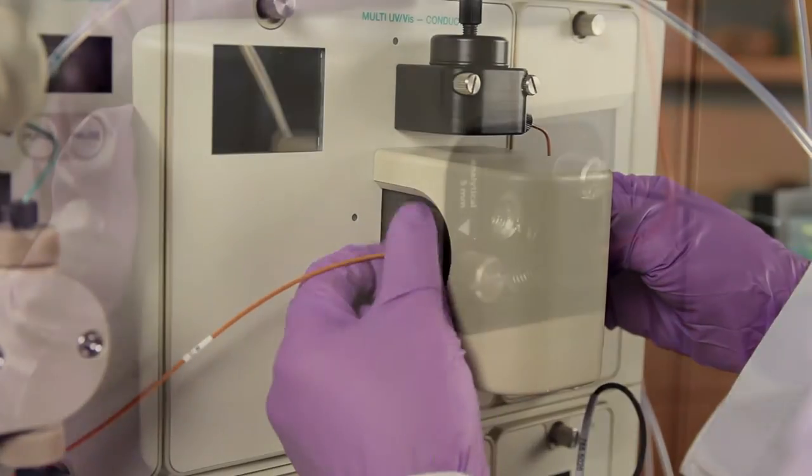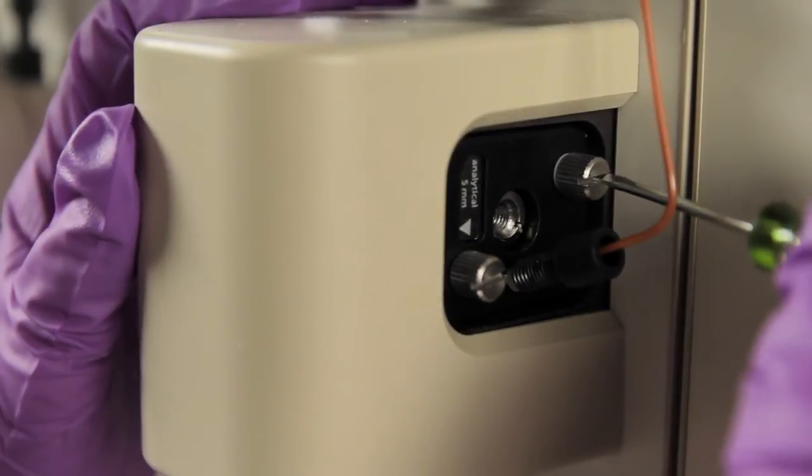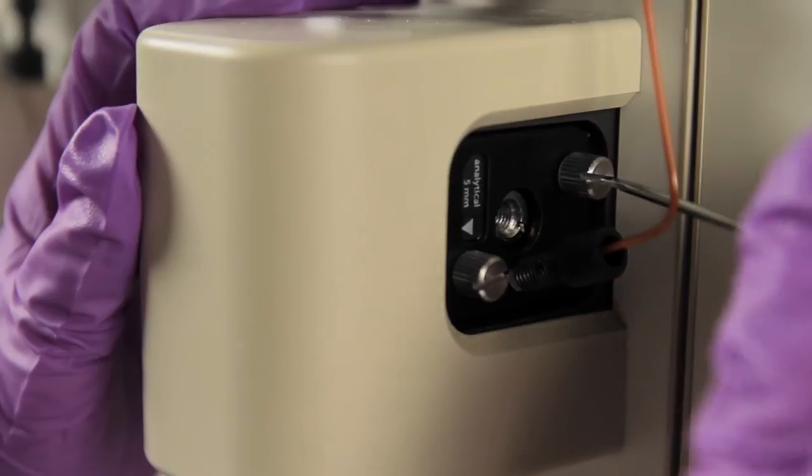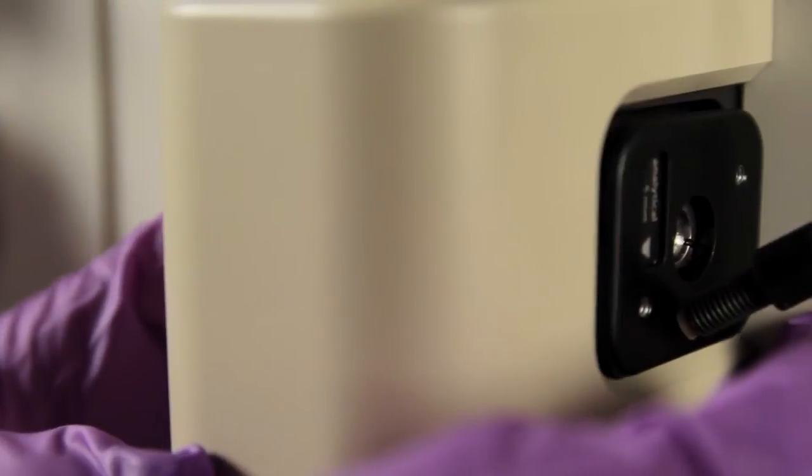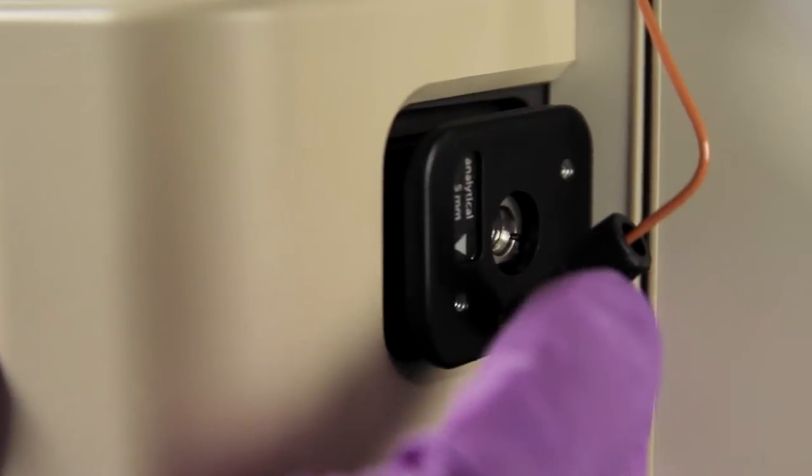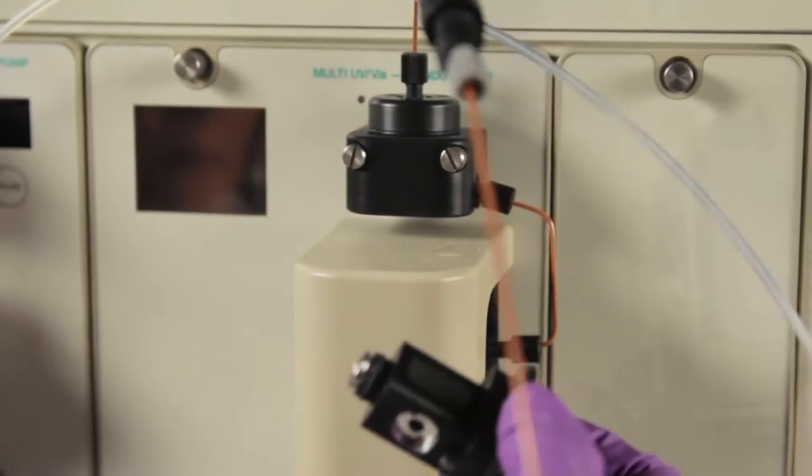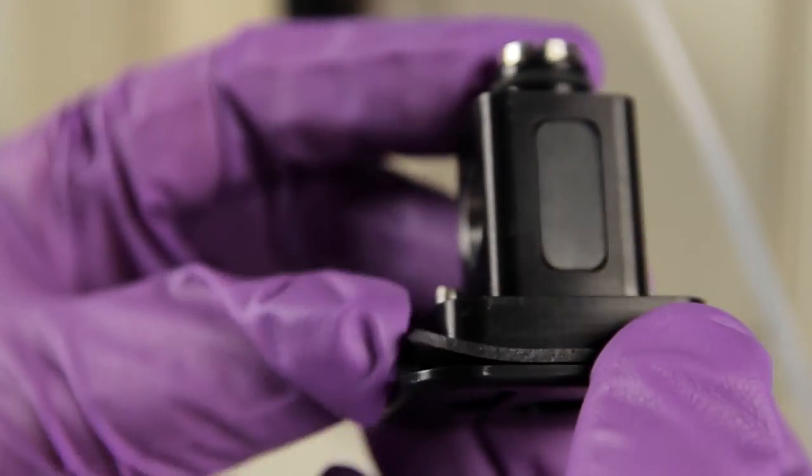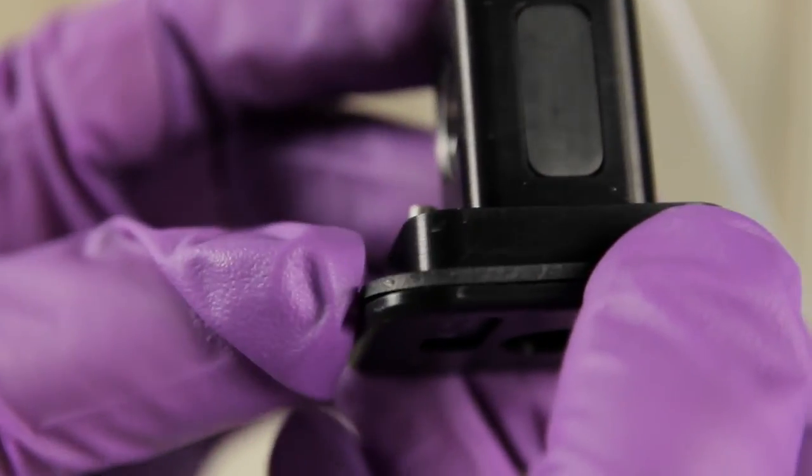Using the screwdriver supplied in the fittings kit, loosen the two thumb screws holding the UV cell and push the flow cell to the right to remove it from the UV monitor. Verify that the square gasket is removed with the flow cell.